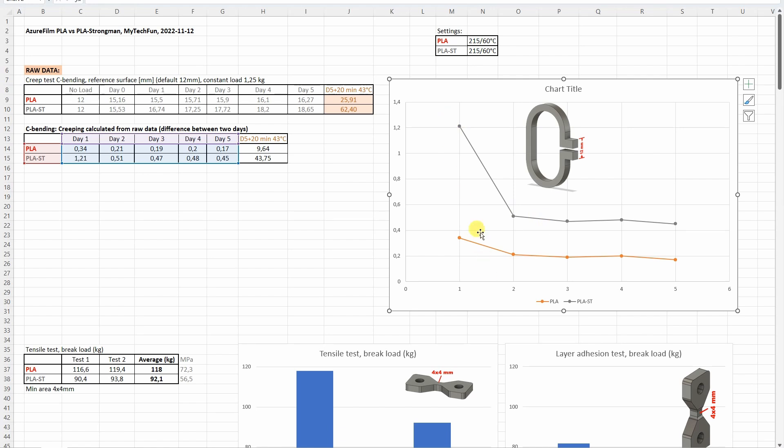It's better if I disable the heating data because it deforms the graph a lot. This is more visible. Here you can see after the second day it almost stabilized, but only almost. If it's not zero, this means we have creeping even on the fifth day. Of course a smaller value is always better. So PLA was better in this test.